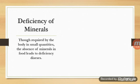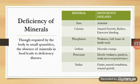Deficiency of minerals also leads to diseases. Iron deficiency causes anemia — low hemoglobin level in the blood. Calcium deficiency leads to stunted growth, rickets, and excessive bleeding. Phosphorus deficiency causes weakness, soft bones, and brittle teeth. Sodium deficiency causes muscular cramps and severe body pain.